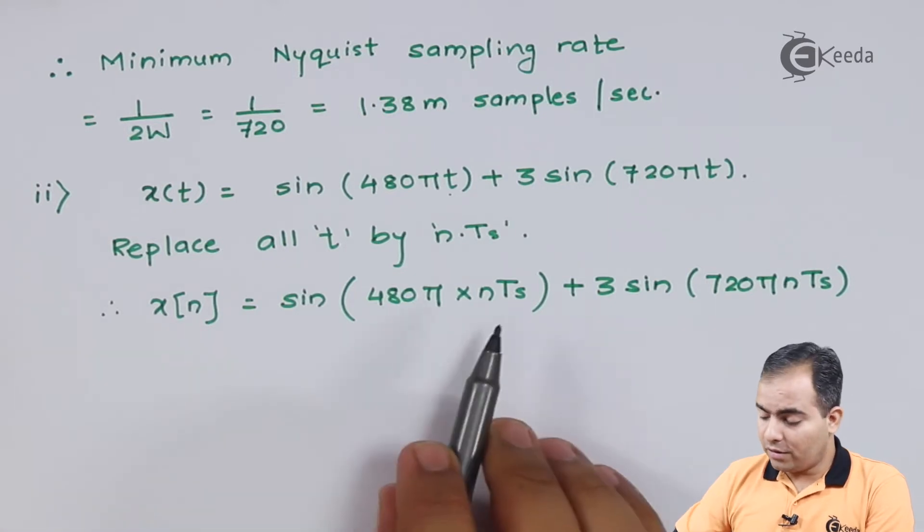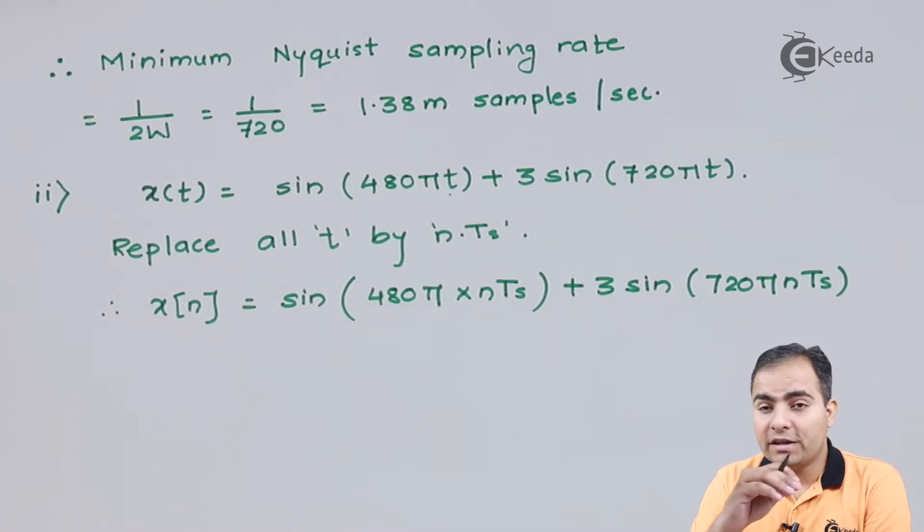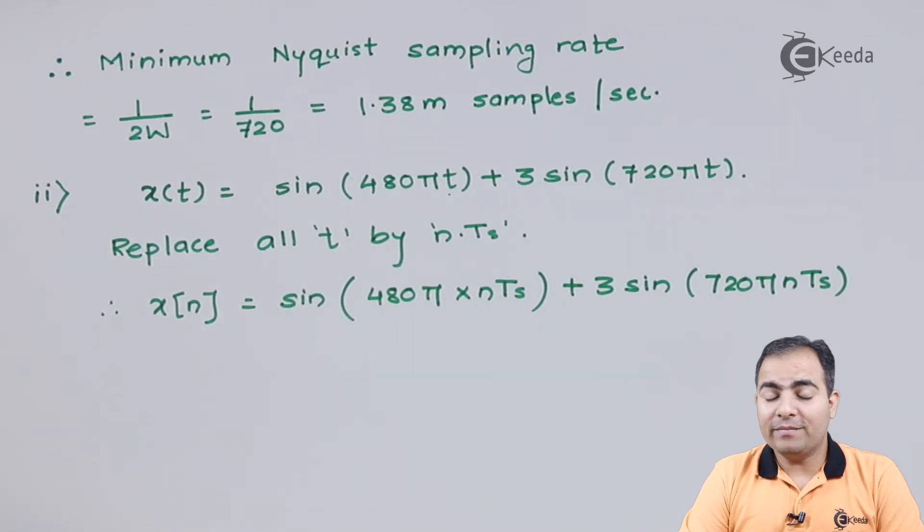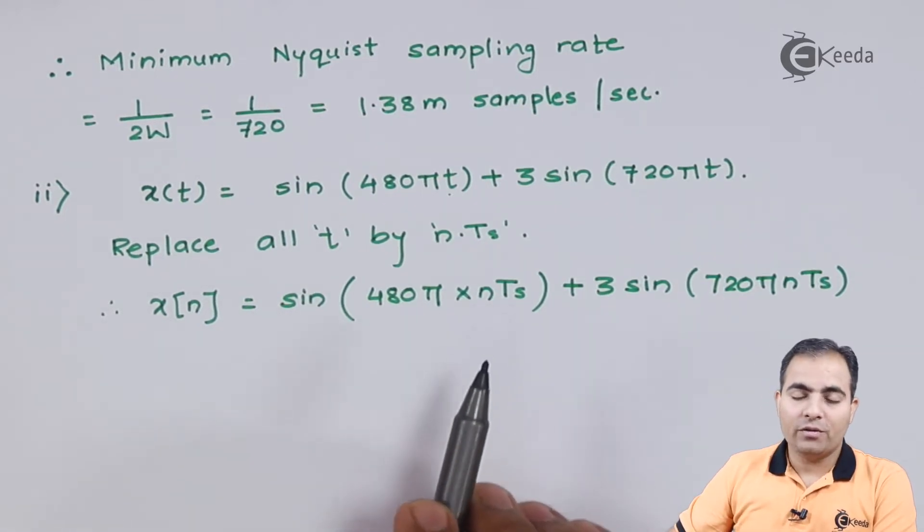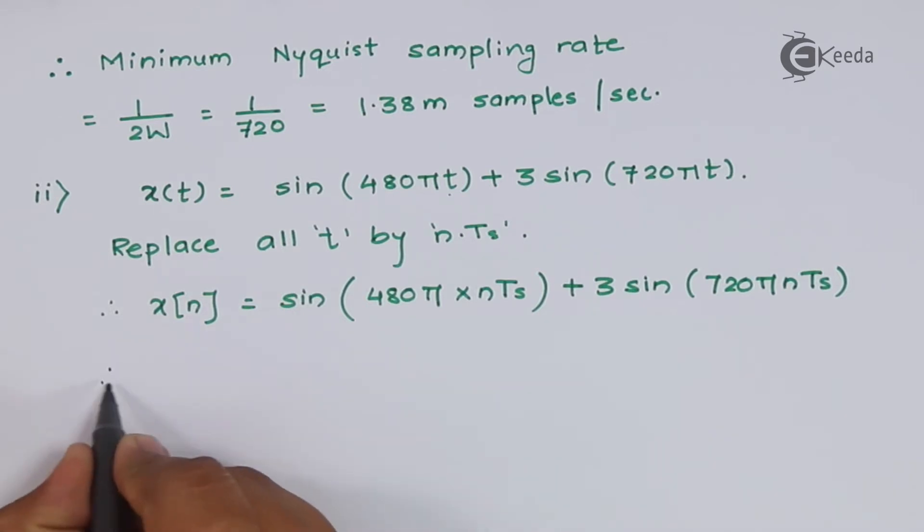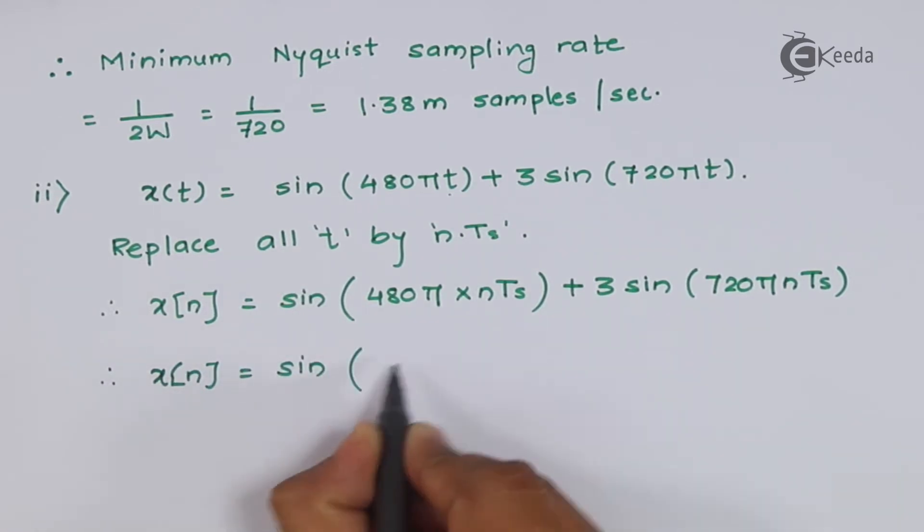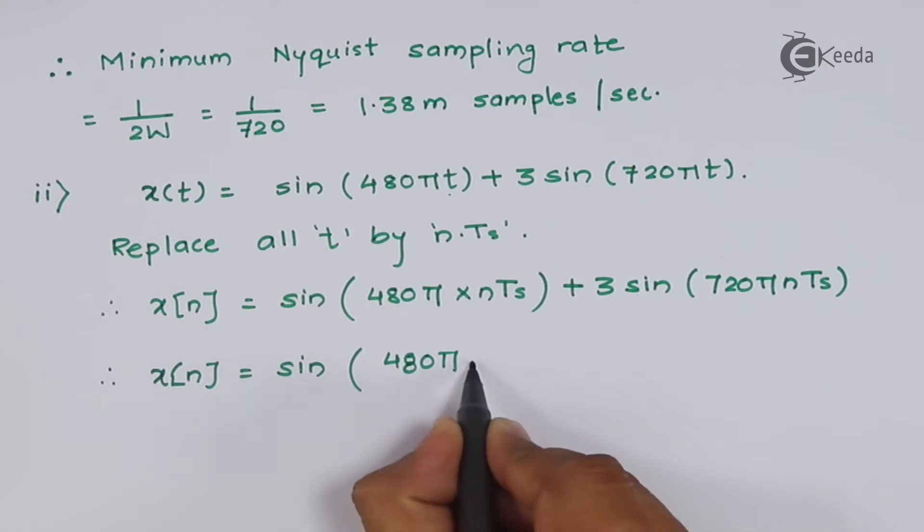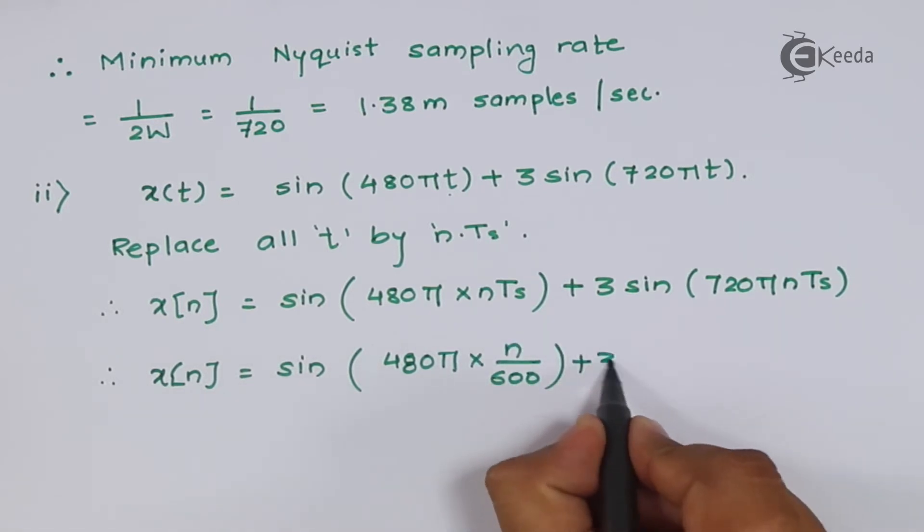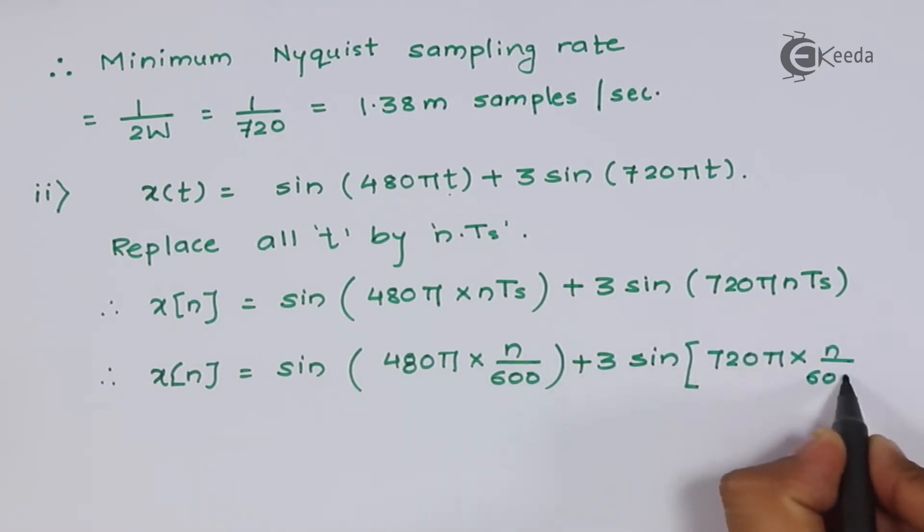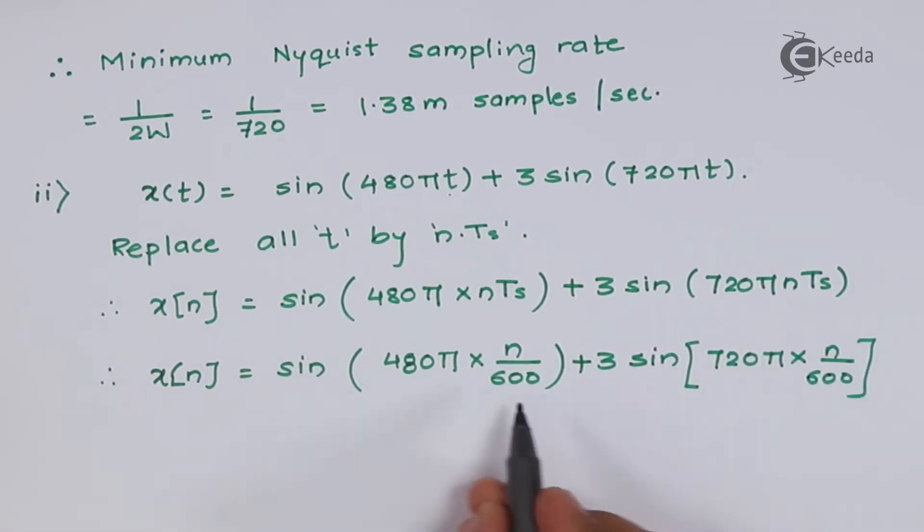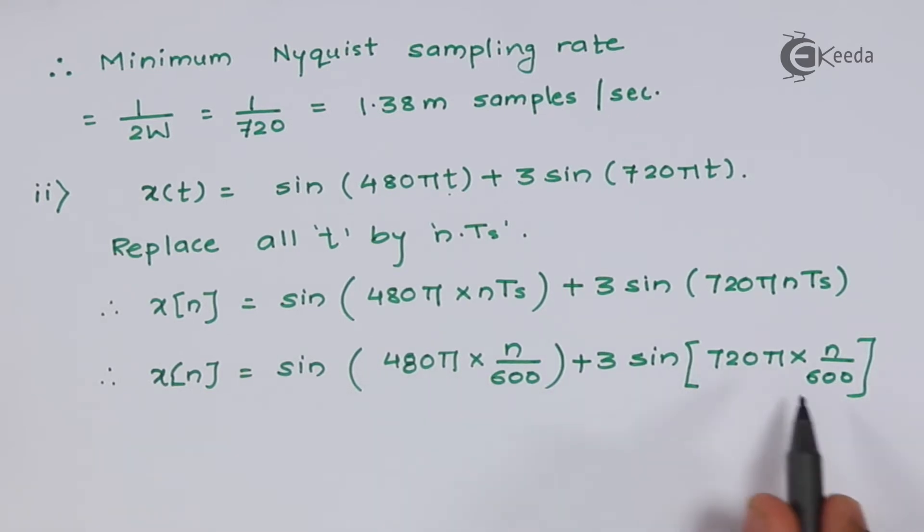In our question, our Ts value is already given, which is 600. We will substitute all the values. 600 per second means the sampling frequency value is 600 samples per second. We will replace this t by 1 upon 600. We will divide 480 as well as 720 by 600.